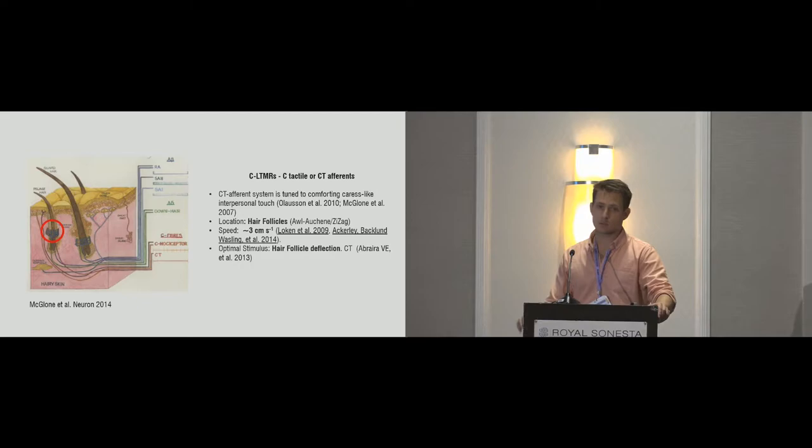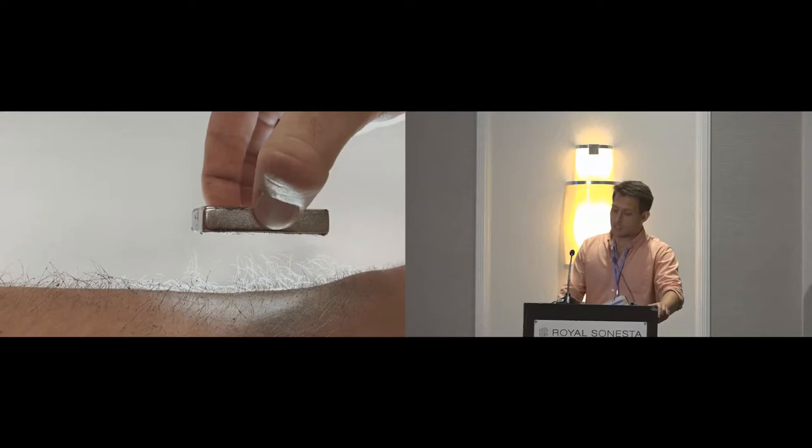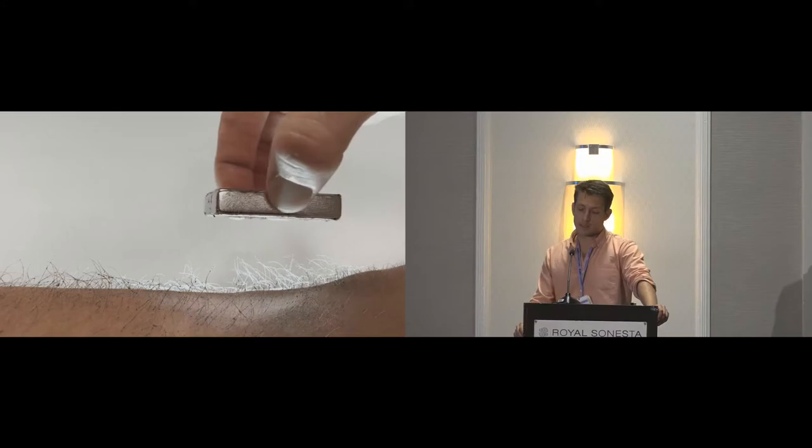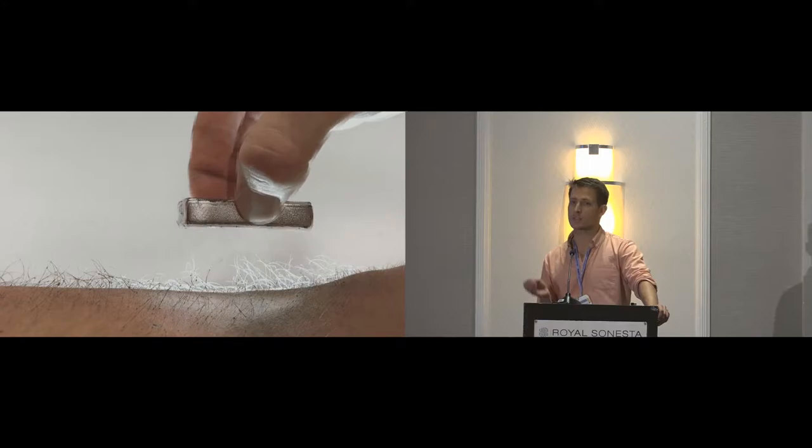These mechanoreceptors are located in different areas of the skin and react to different types of stimulus like stretching and vibrating. In specific, there is one type of mechanoreceptor that has been linked to social touch, which are C-tactile afferents. These are mainly located in the hair follicle, and the best way to stimulate them is at about three centimeters per second through a gentle stroke and hair deflection.